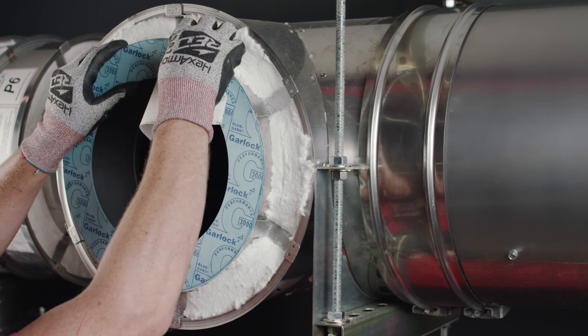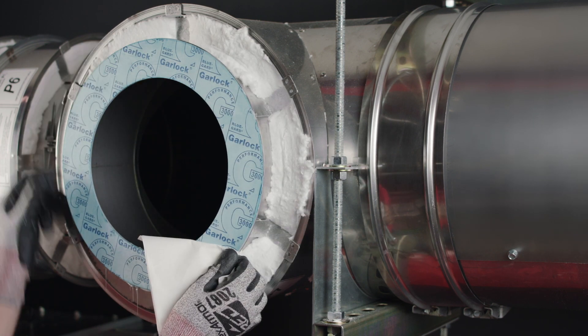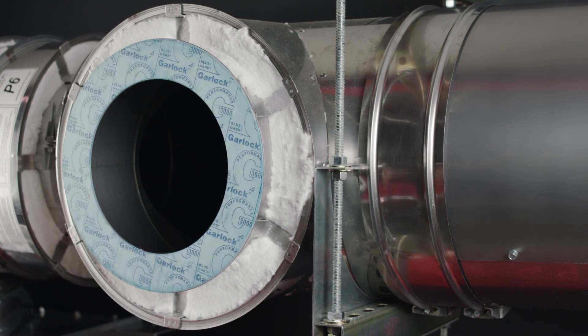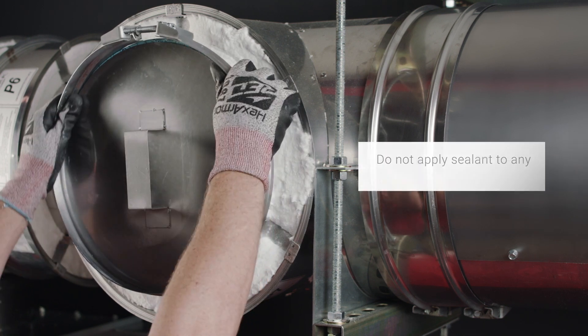Remove the excess sealant so that the access door can be removed later. Once the sealant is dry, attach the access door using a V-band.